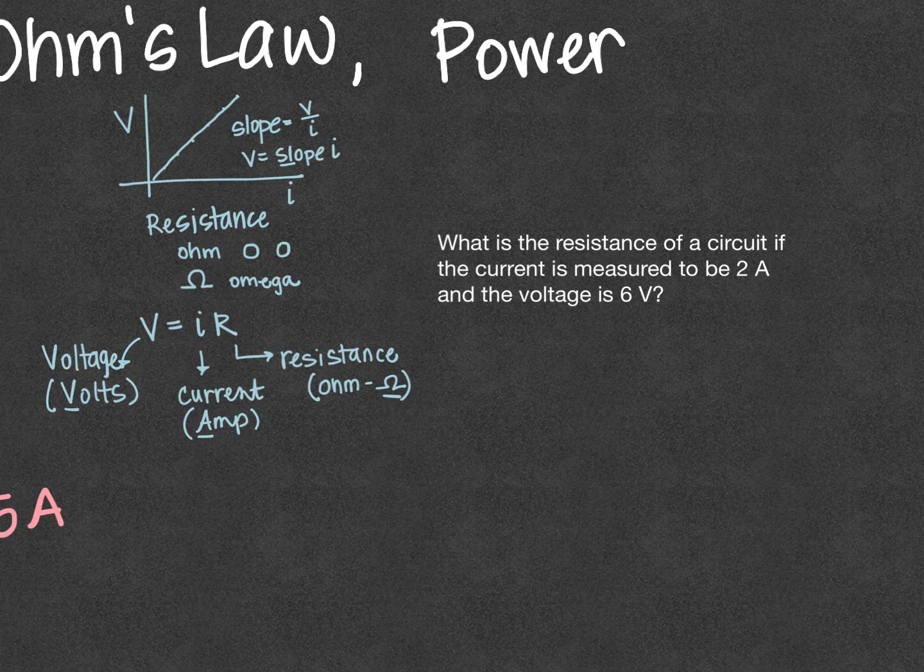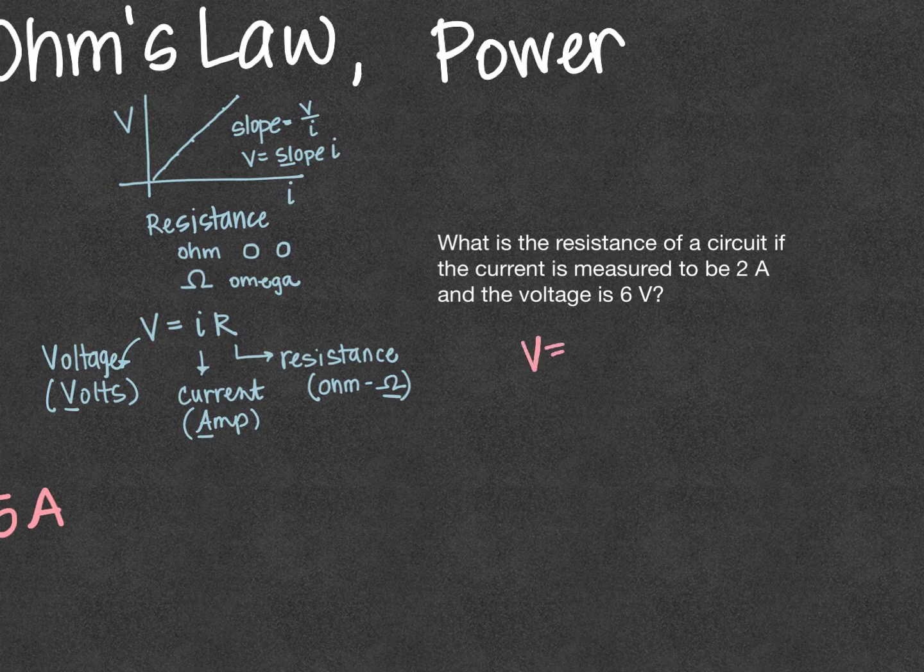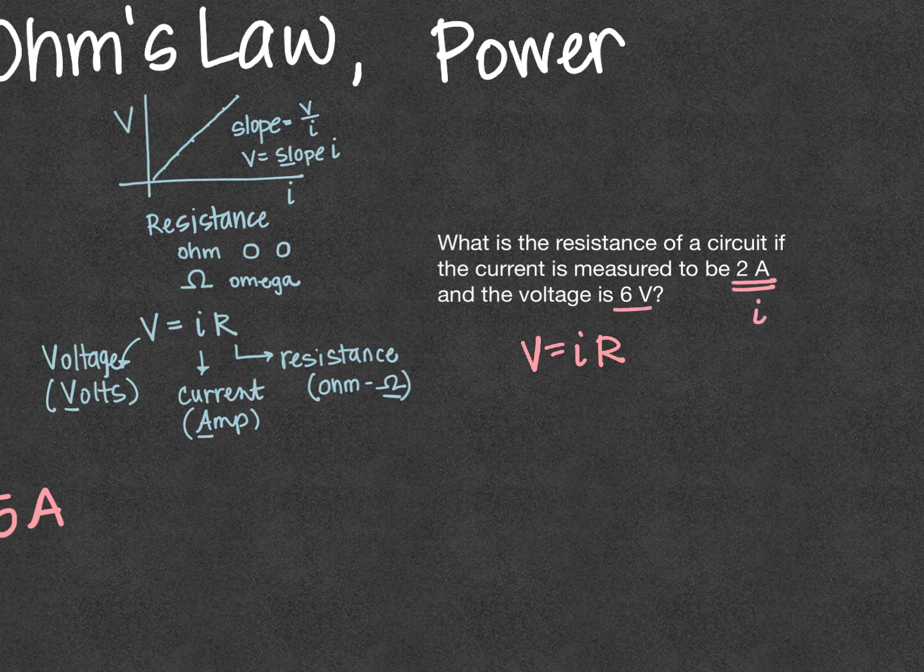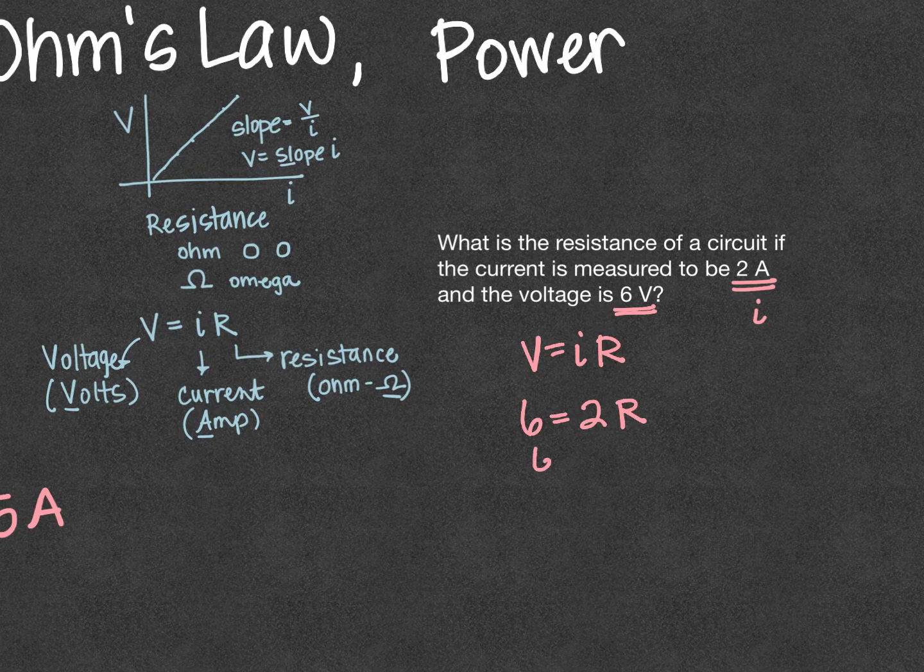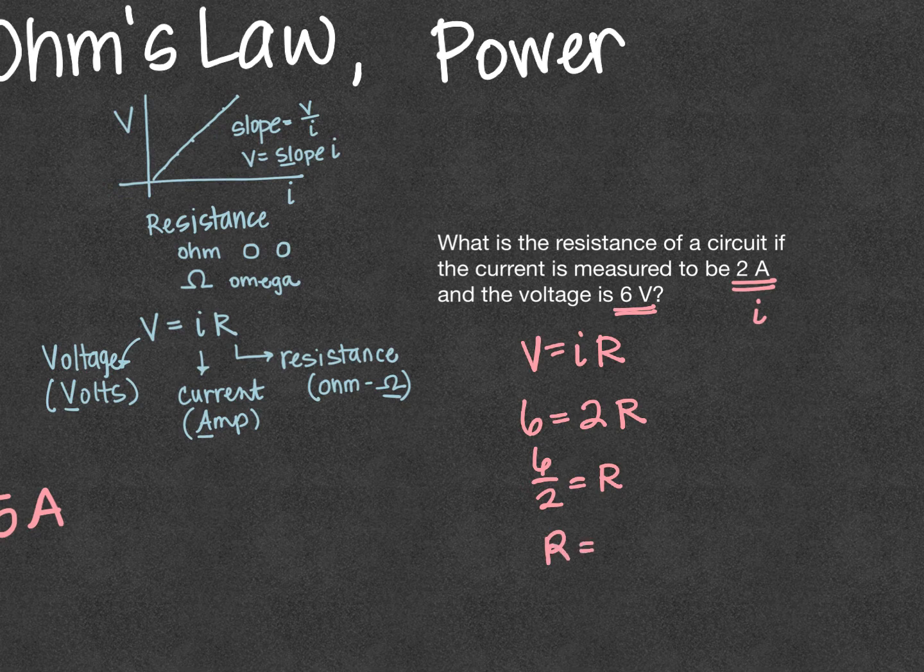In this case, we have V equals IR. We have the current, that's the I, and we have the voltage, that's the 6 volts there. And so 6 will equal 2 times R. So 6 divided by 2 is R. So R would be 3 ohms.